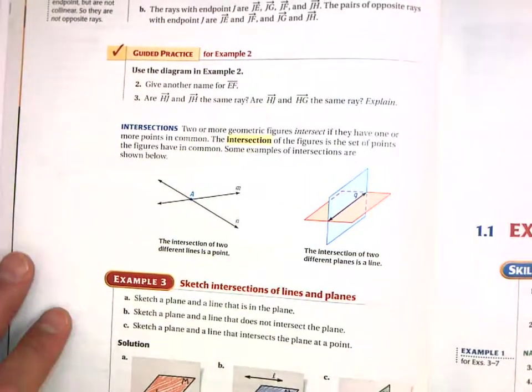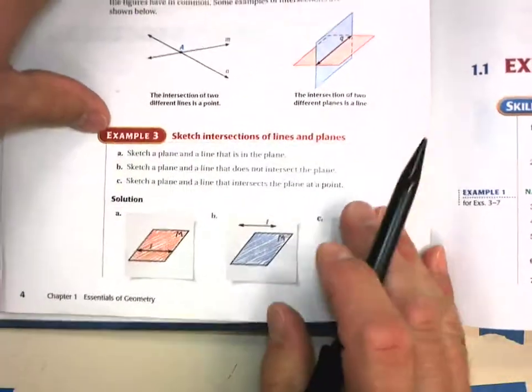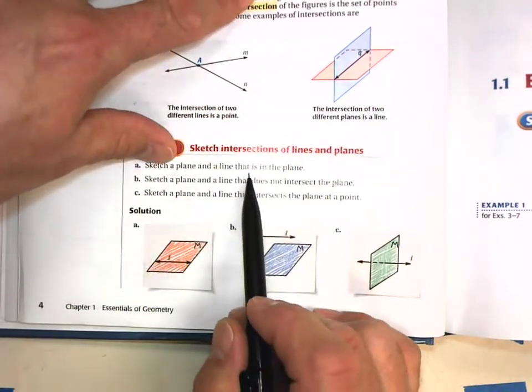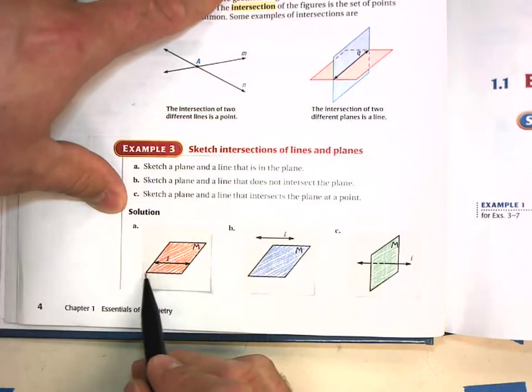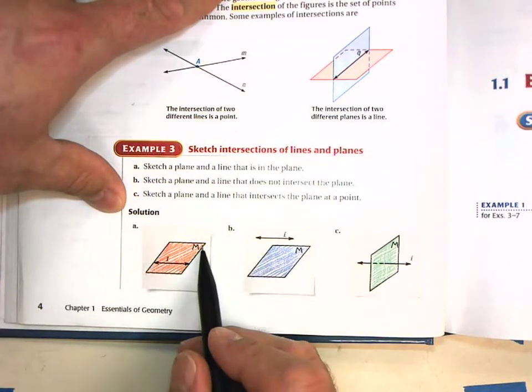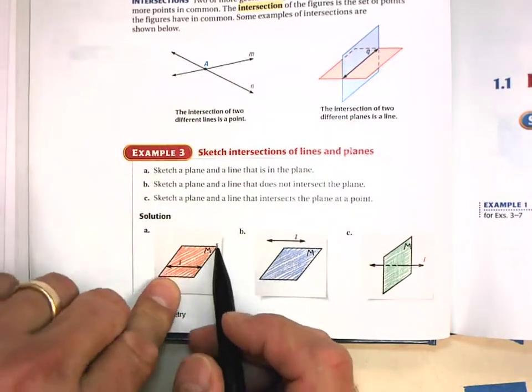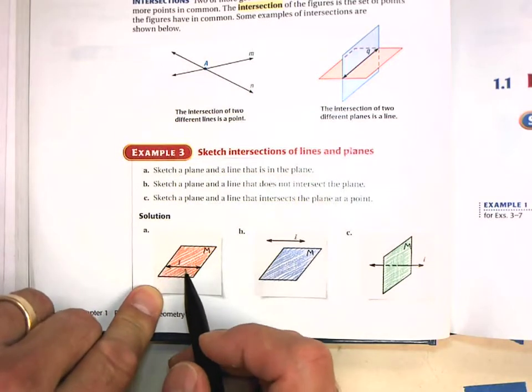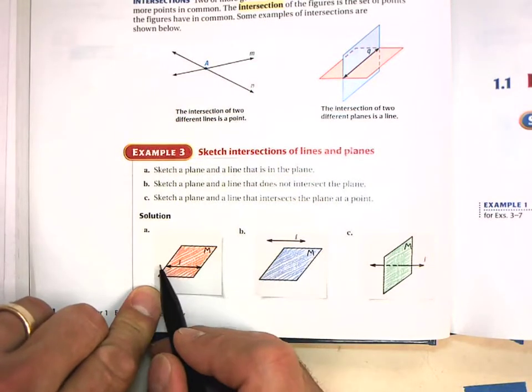Example three. Sketch the intersections of lines and planes. So sketch that plane and a line that is in the plane. So here's a plane. We normally do it like a parallelogram, slanted off to the side like this, is what we use to represent a plane. And then here is a line that is on that plane.